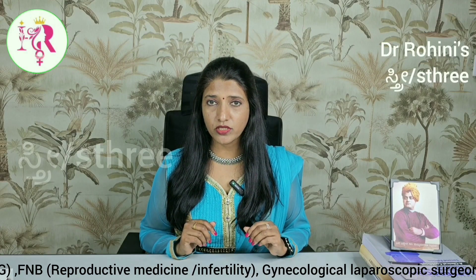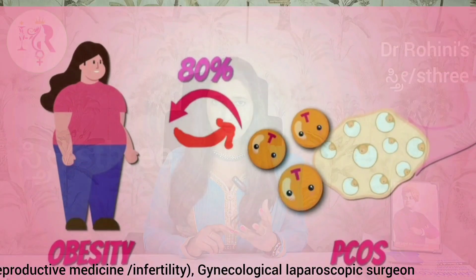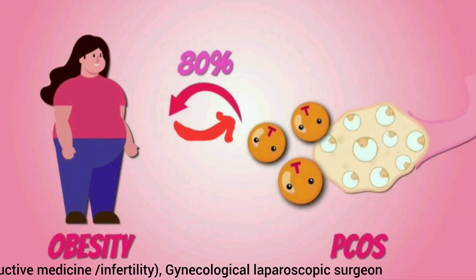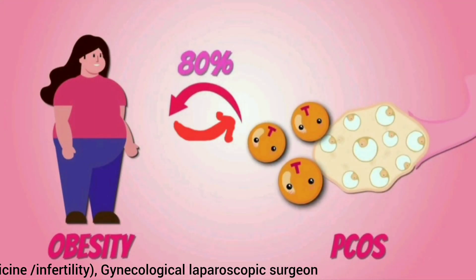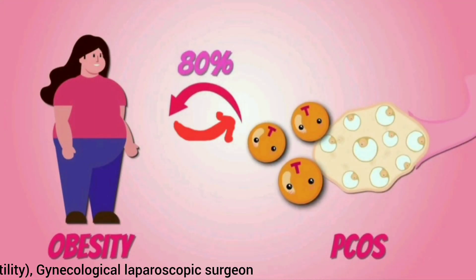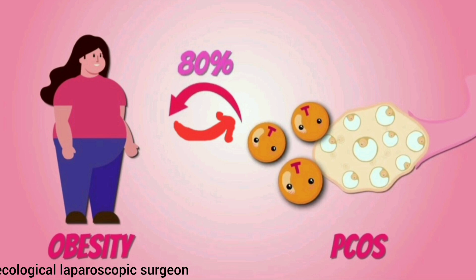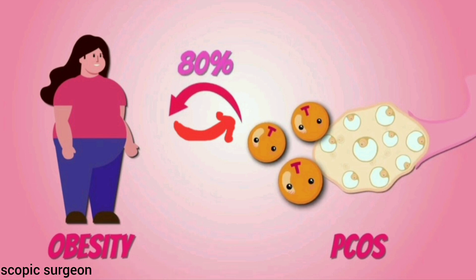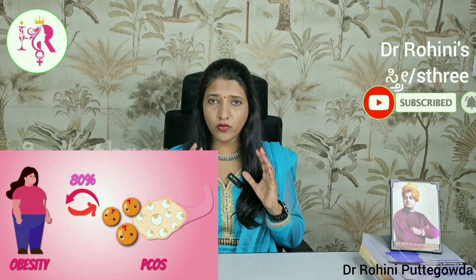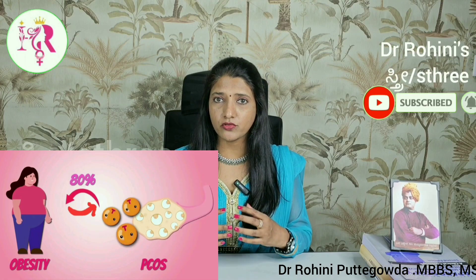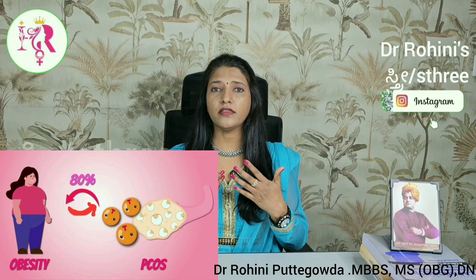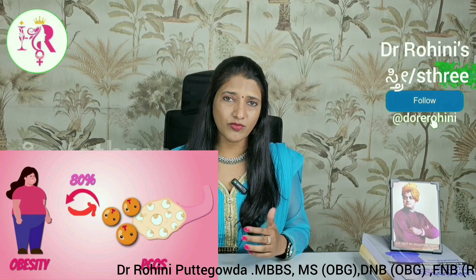The metabolic problems which can happen in patients with PCOD include obesity. As mentioned earlier, there are already increased insulin levels — that is hyperinsulinemia — in obesity, and also in patients with PCOD there is already hyperinsulinemia. When both PCOD and obesity are combined together, the bad effects of these hormones increase.